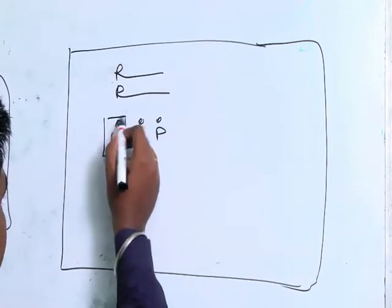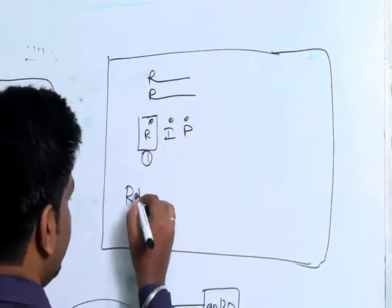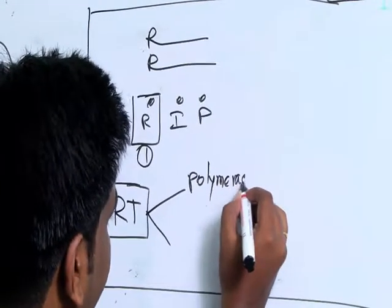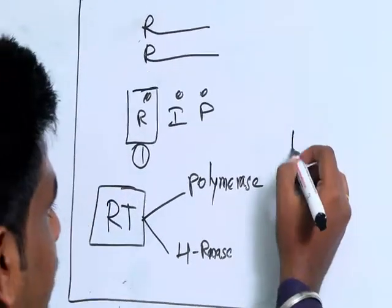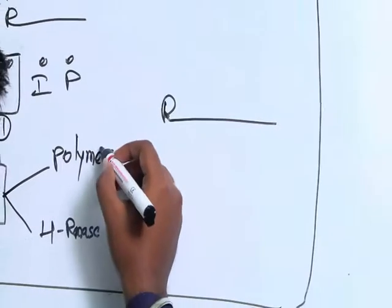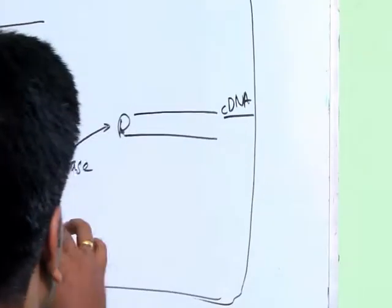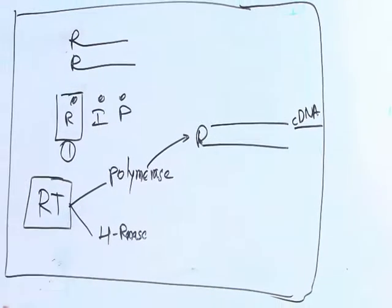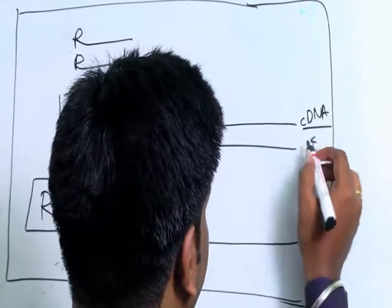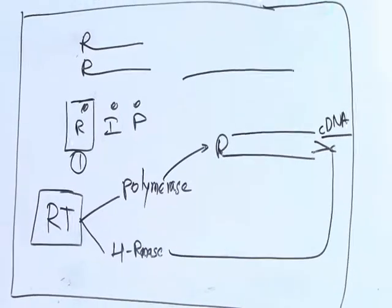The first enzyme is reverse transcriptase. It has two parts: the polymerase region and the RNase H region. The polymerase acts on RNA to form a complementary DNA. Even after DNA formation, it stays attached to the RNA, so the RNase H cleaves and makes the complementary DNA come apart. That is the function of the RNase H.